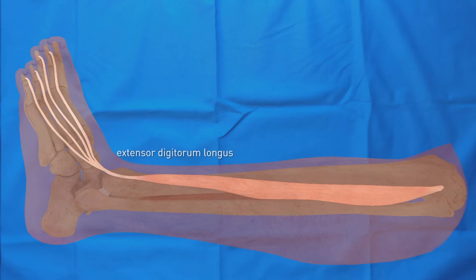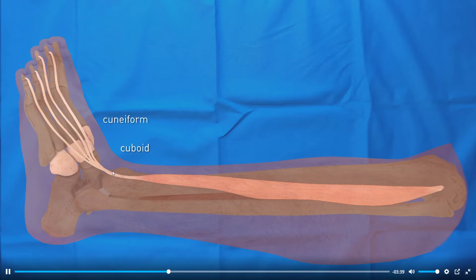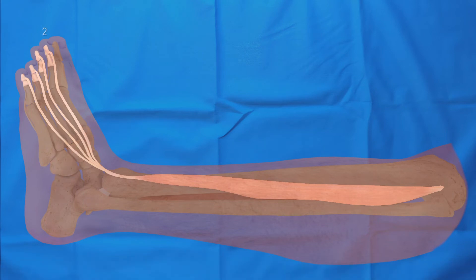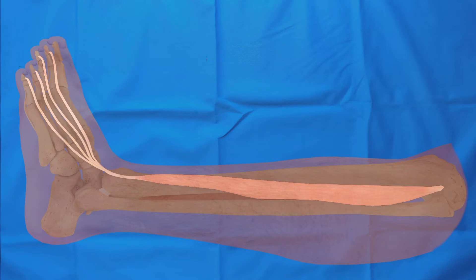The extensor digitorum longus runs anterolateral to the distal tibia. It splits into four slips after it passes the cuneiform and cuboid bones. Each slip attaches to the dorsal side of the second, third, fourth, and fifth middle and distal phalanges. Digital extension is performed by this muscle and its corresponding tendons.